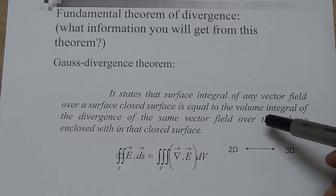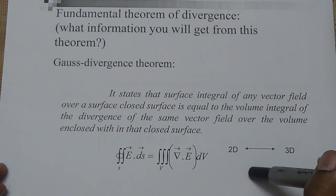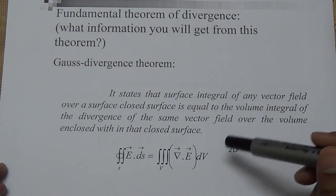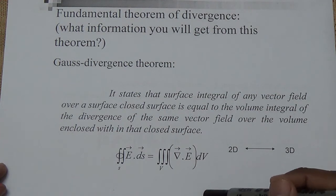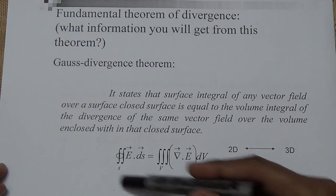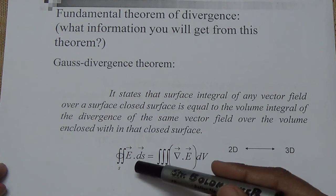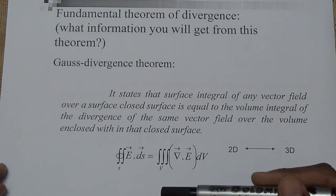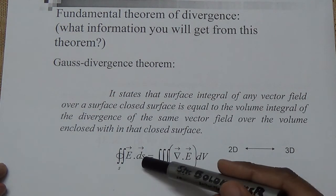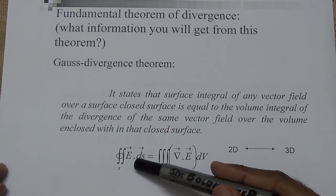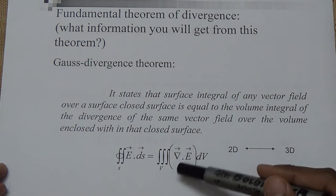Before that, we need to use some mathematical statements — the Gauss Divergence Theorem and Stokes Theorem. Our purpose for this course is to use the mathematical statement that the closed surface integral of E dot dS, which is the electric flux coming out from the closed surface, is equal to the divergence of the electric field within the volume enclosed by the closed surface.